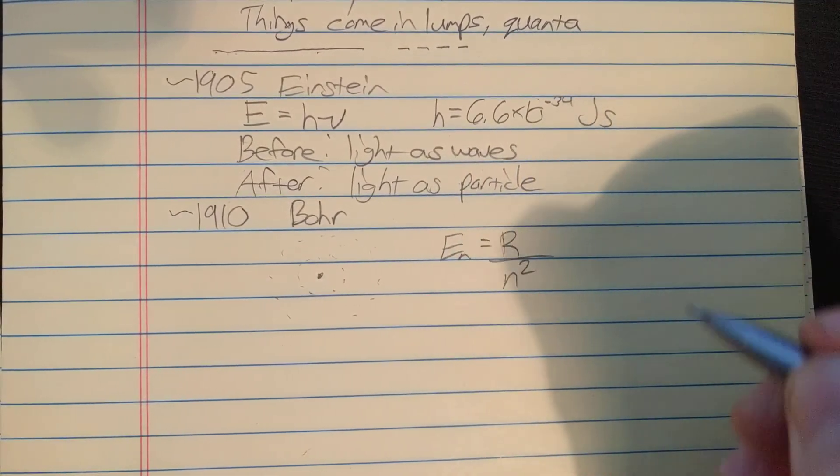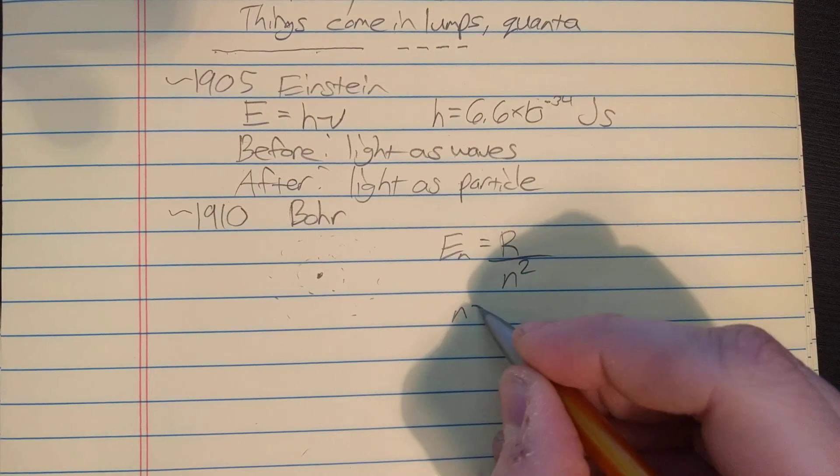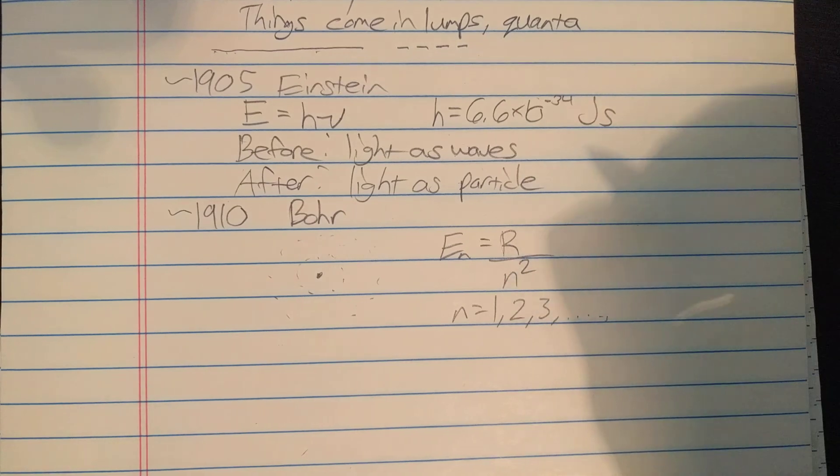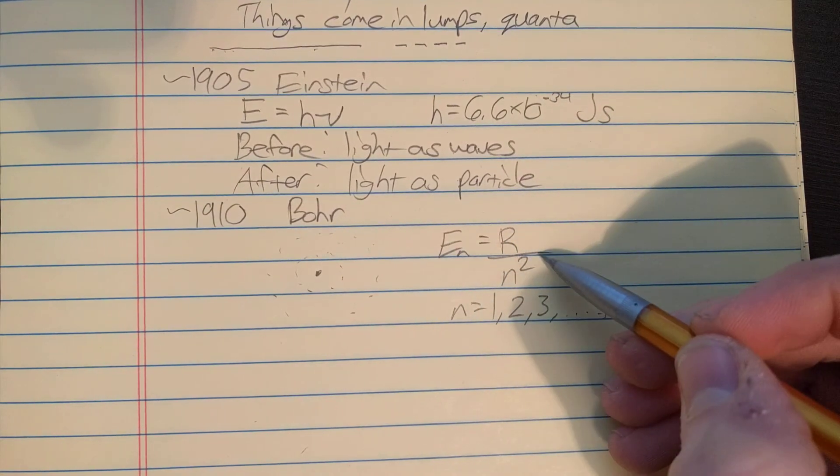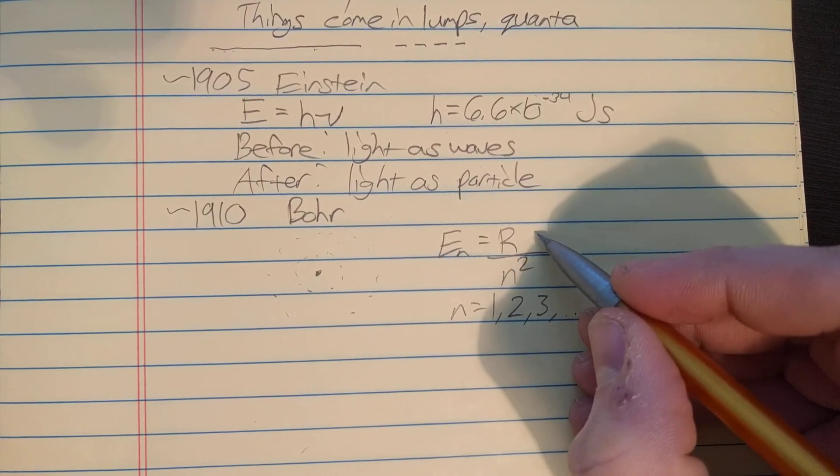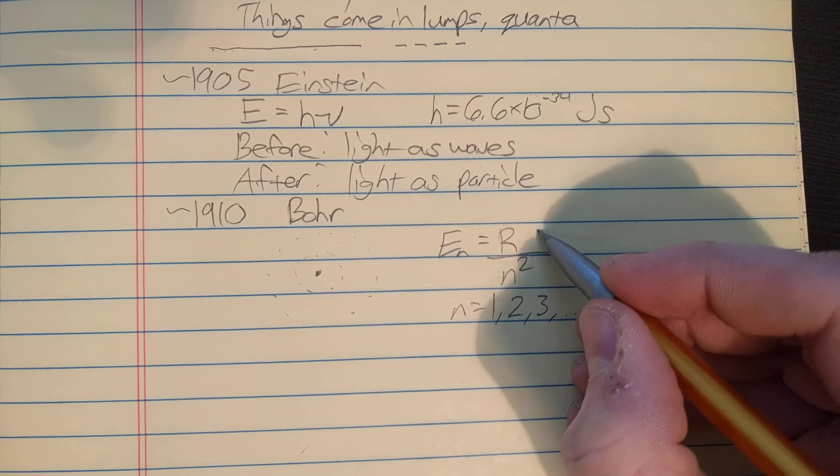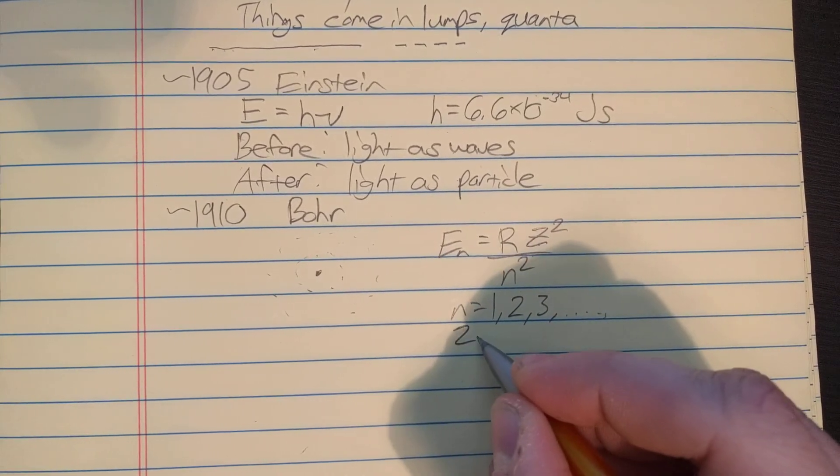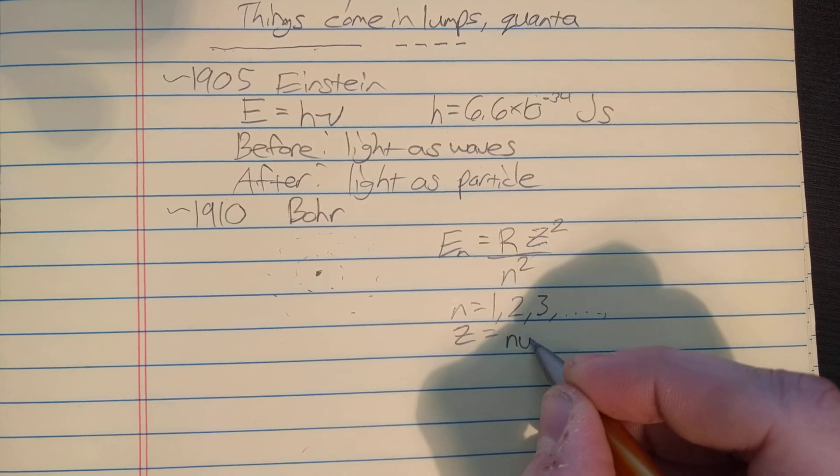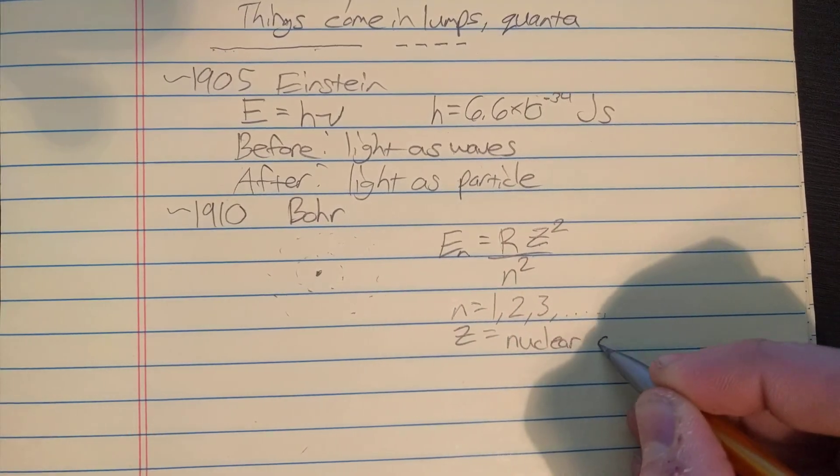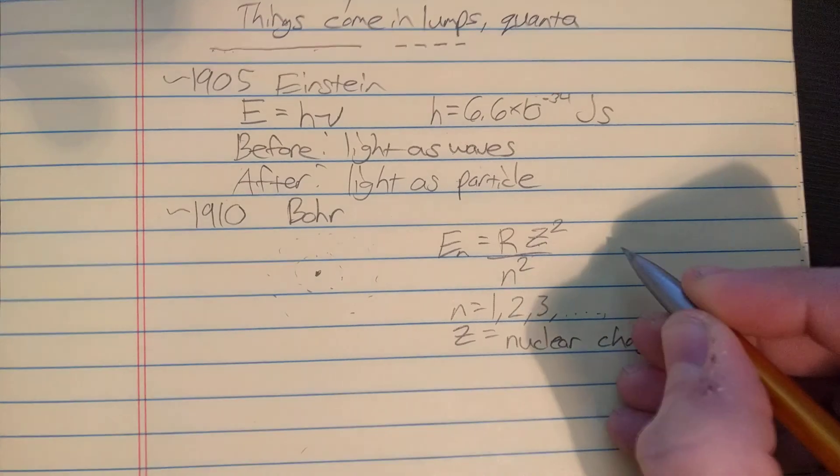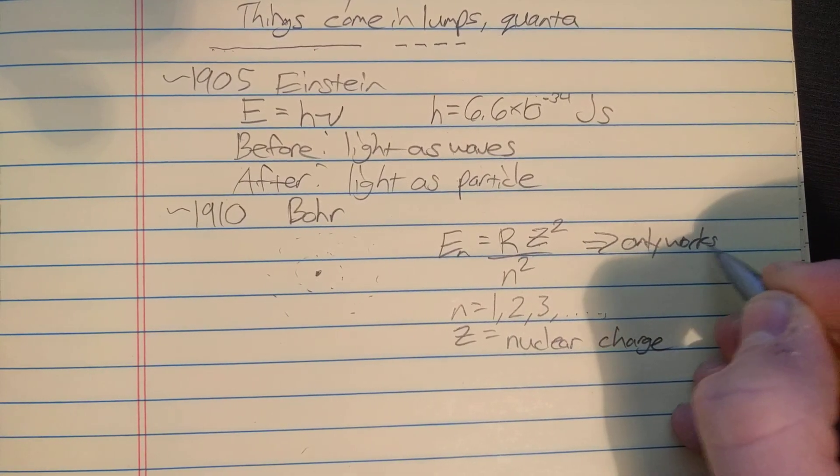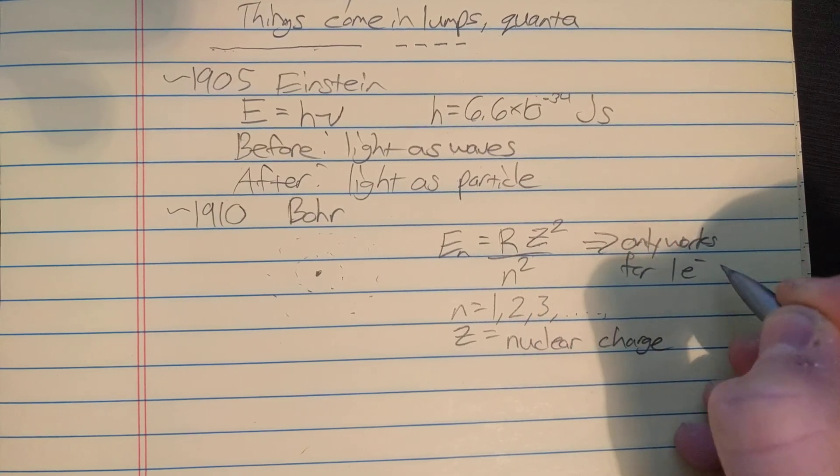Bohr gave us that electron orbitals are discrete. He said the energy of that orbital, let's say the nth orbital, is equal to some constant divided by n squared. Now n can equal 1, 2, 3. It has to be an integer. This was for the hydrogen atom. If you wanted to explain any single electron atom, you would just add this factor z squared, where z is equal to the nuclear charge or how many protons you have. This only works for one electron atoms.